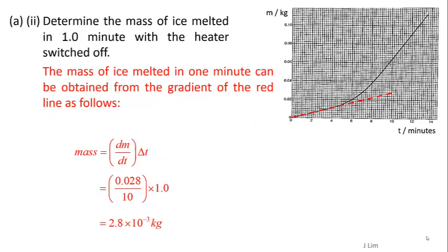The mass of ice melted in 1 minute can be obtained from the gradient of the red line, and the mass will be 2.8 times 10 to the power of minus 3 kg.